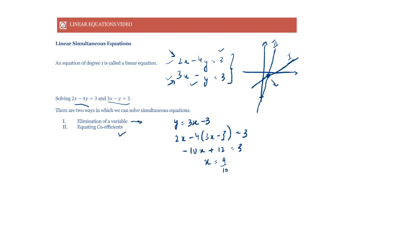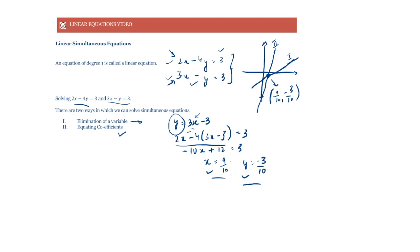This gives us x is equal to 9 by 10. Putting x back, we get y is equal to minus 3 by 10. So the solution point is (9/10, −3/10) — the point of intersection of the two lines. In this method we eliminated y, found y in terms of x, substituted to find x, then substituted back to find y.